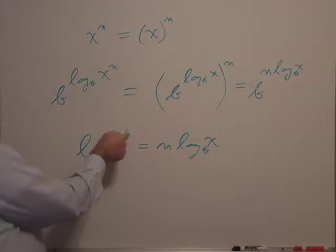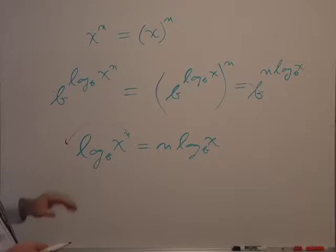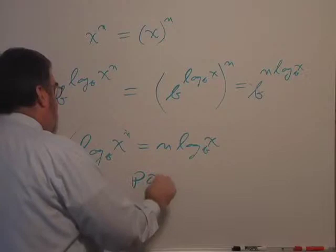So it's as if when you have a log of something raised to power, it's as if you can take this power and bring it to the front, like so. And that turns out to be a very useful property. So we call that the power rule of logarithms.